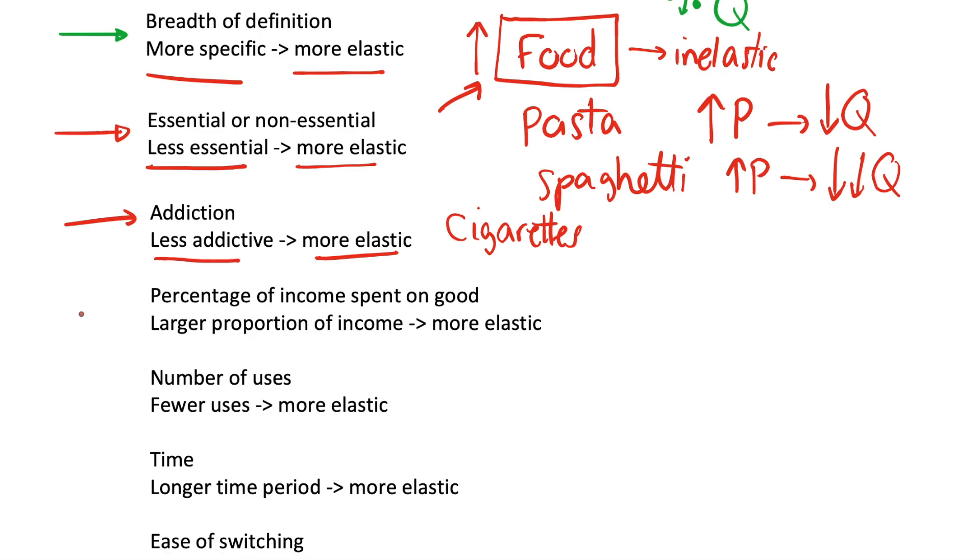Another factor to consider is the percentage of income spent on that good. So if a good takes up a large proportion of your income, you're going to be more elastic to changes in its price. Let's look at an example of your rent, and let's consider that you're spending 50% of your income on rent. Well, consider that your rent, it's slightly unlikely, but your rent doubles in price.